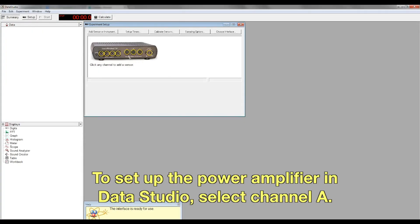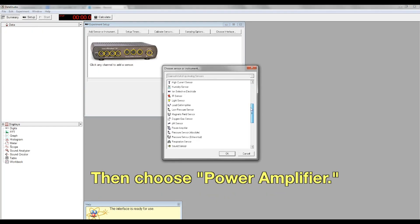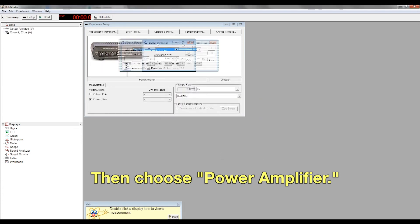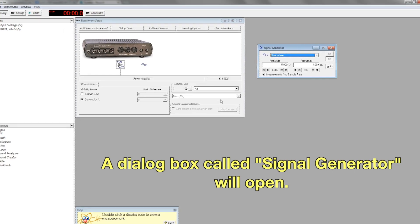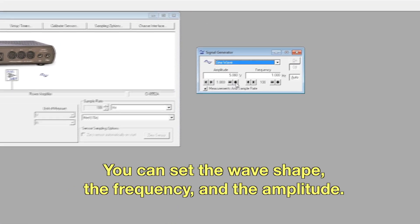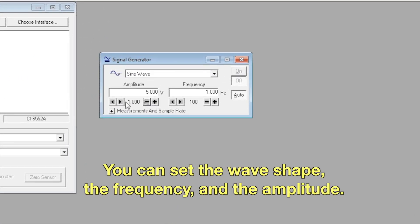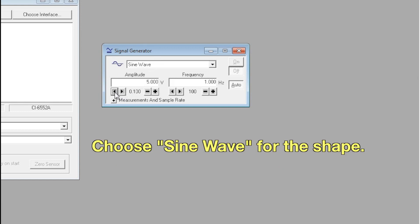To control the power amplifier with Data Studio, select Channel A and then choose Power Amplifier. A dialog box called Signal Generator will open. Here you can select the wave shape, the frequency, and the amplitude. Choose sine wave for the wave shape.